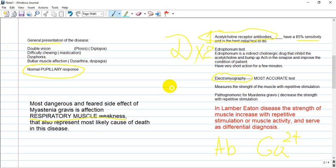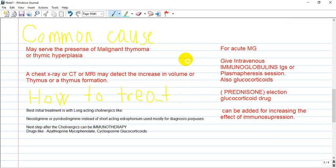Electromyography is one of the most accurate tests. It measures muscle strength with repetitive stimulation and is pathognomonic for myasthenia gravis. If the patient does repetitive muscle movements and strength decreases, it indicates myasthenia gravis.